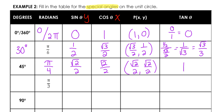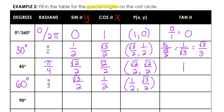Pi over three — thinking about 180 divided into three equal parts gives a 60-degree angle. The y-coordinate is square root of three over two and the x-coordinate is one half. So the point is (one half, square root of three over two). Dividing y by x gives square root of three over two divided by one half, which gives the square root of three as the tangent.